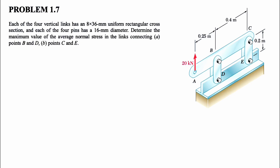Welcome back. We're going to be solving another question from the first chapter of Beer & Johnston's textbook, Mechanics of Materials. In this question, each of the four vertical links has an 8 by 36 millimeter uniform cross section, and each of the four pins has a 16 millimeter diameter. We need to determine the maximum value of the average normal stress in the links connecting at point B and D in part A, and at points C and E in part B.